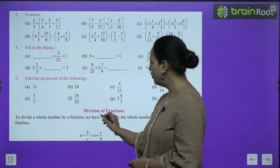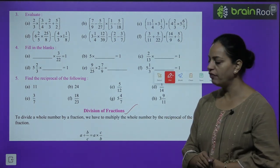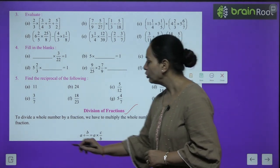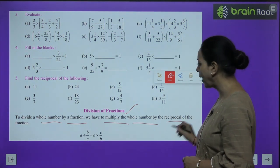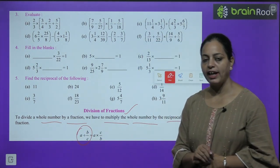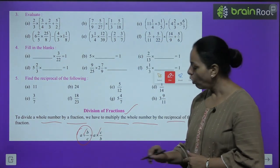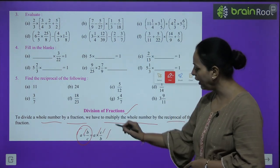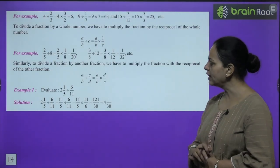Division of fractions: to divide a whole number by a fraction, multiply the whole number by the reciprocal of the fraction. So a ÷ (b/c) = a × (c/b). Example: 4 ÷ 2/3 = 4 × 3/2 — cancel → answer is 6. Similarly: 9 ÷ 1/7 = 9 × 7 = 63; 15 ÷ 3/15 = 15 × 15/3 = 75.